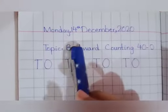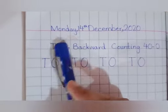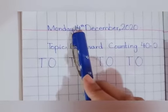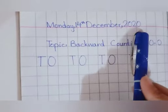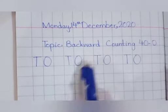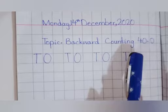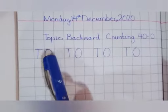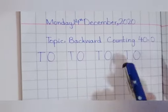Let's come to the copy work. First of all, you will write the date: Monday, 14 December, 2020. Then you will write the topic: Backward counting, 42 to 0.